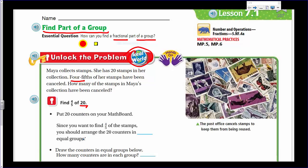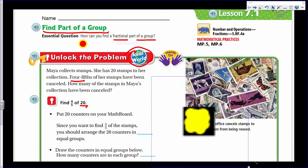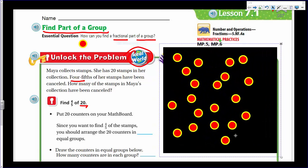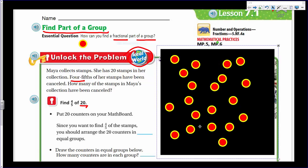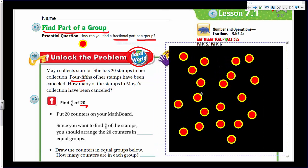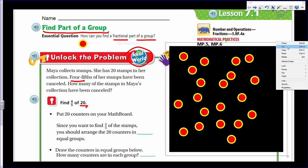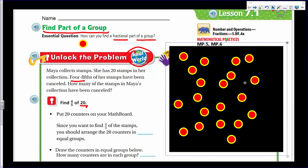Now it says, put 20 counters on your math board. And I'm going to open it up, and you're going to go, whoa, dude, that's cool. Yep. Is that cool? It's my little math board. I used black because I thought the colors would look more vibrant. Here we go. So there's 20 counters on there, and that can be represented as the number of stamps that Maya collected.